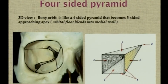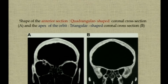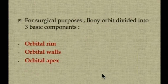The orbit is like a four-sided pyramid in three-dimensional view, with the opening at the level of the orbital entrance. As we go behind, the orbital floor merges with the medial wall, and towards the apex the orbital cavity becomes triangular in shape. In two-dimensional view, the anterior section has a quadrangular cross-section, whereas towards the orbital apex the cross-section becomes triangular. From a surgical point of view, the bony orbit is divided into three basic components: the orbital rim, the walls, and the apex.